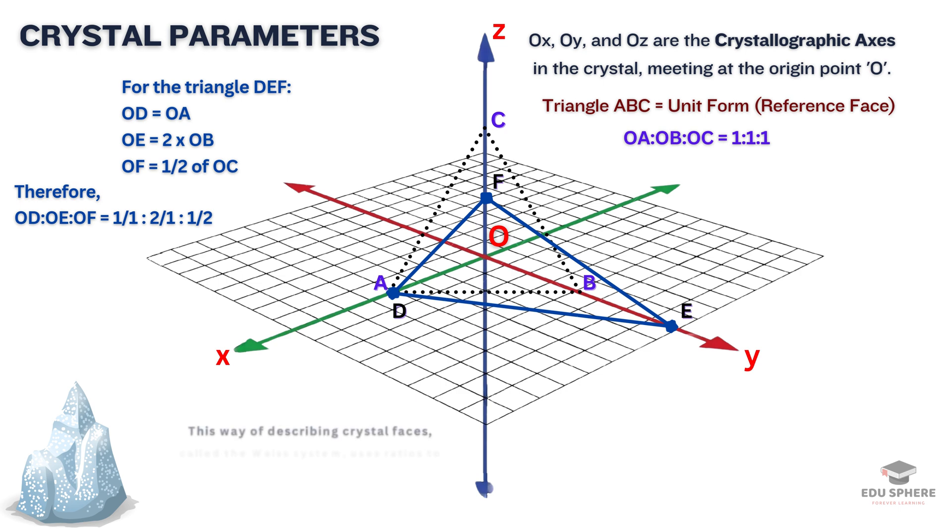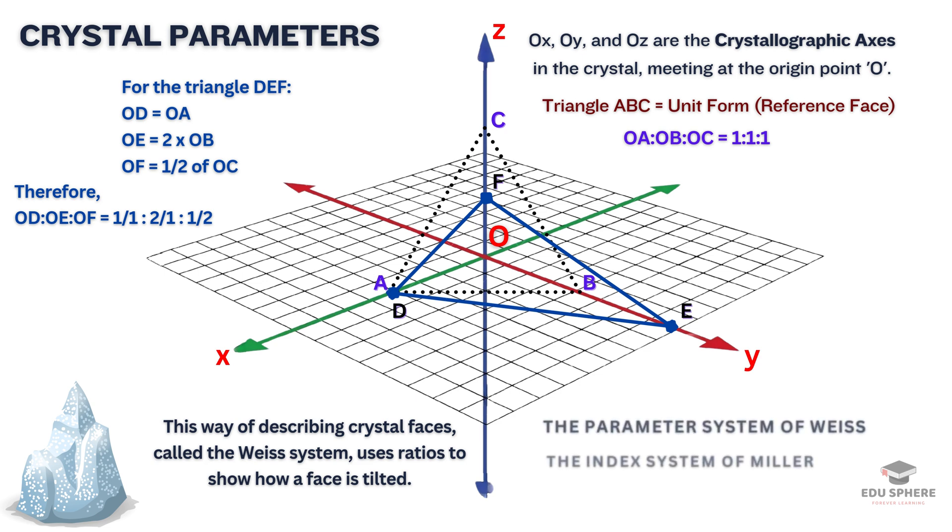This way of describing crystal faces uses ratios to show how a face is tilted. We can also flip these ratios to get indices, which give us another way to understand crystal shapes. Basically, if we know the size of the unit form, we can easily describe the size of other faces using ratios. Now let's explore the following two commonly used methods for representing crystal faces.